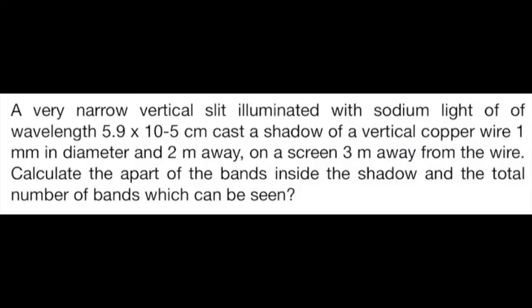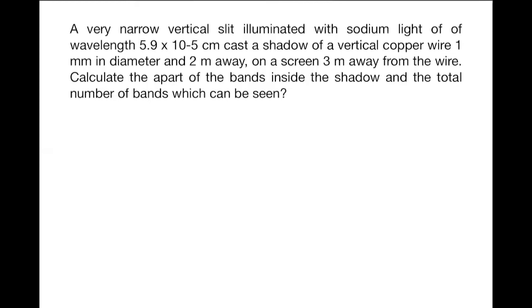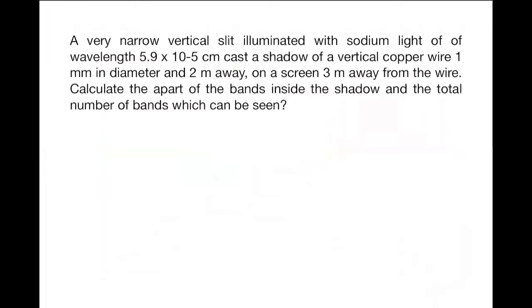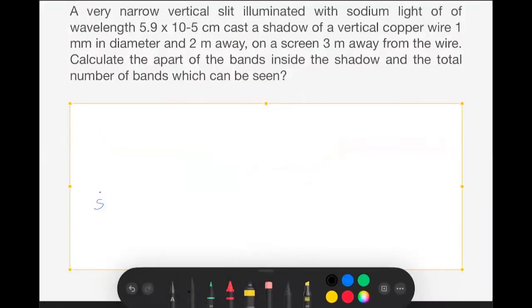Numerical problem: A very narrow vertical slit illuminated with sodium light of wavelength 5.9 × 10⁻⁵ cm casts a shadow of a vertical copper wire of 1 mm diameter. The wire is two meters from the source and a screen is three meters away from the wire. Calculate the distance apart of the bands inside the shadow and the total number of bands that can be seen.